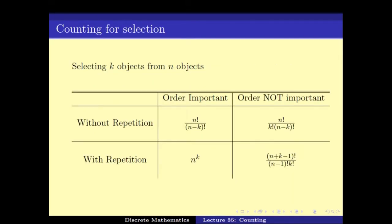Here is what we found for the counting for selection: if you have to select k objects from n objects, then depending on whether repetitions are allowed — meaning whether the same object can be chosen more than once — and whether the order in which we pick the k objects matters, we have these various answers. A couple of videos earlier we did prove all these numbers.